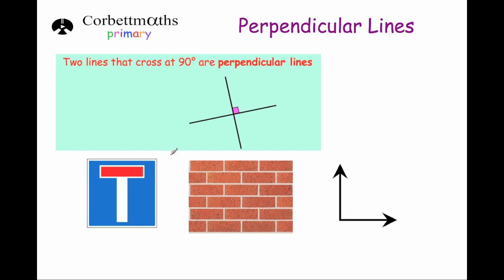Some examples of perpendicular lines: this dead end sign, which you might see on a road — this white line and this red line are perpendicular, they meet at 90 degrees. These bricks — at the joints in them, the mortar joining them — you can see this line and this line are at 90 degrees to each other, so they're perpendicular.